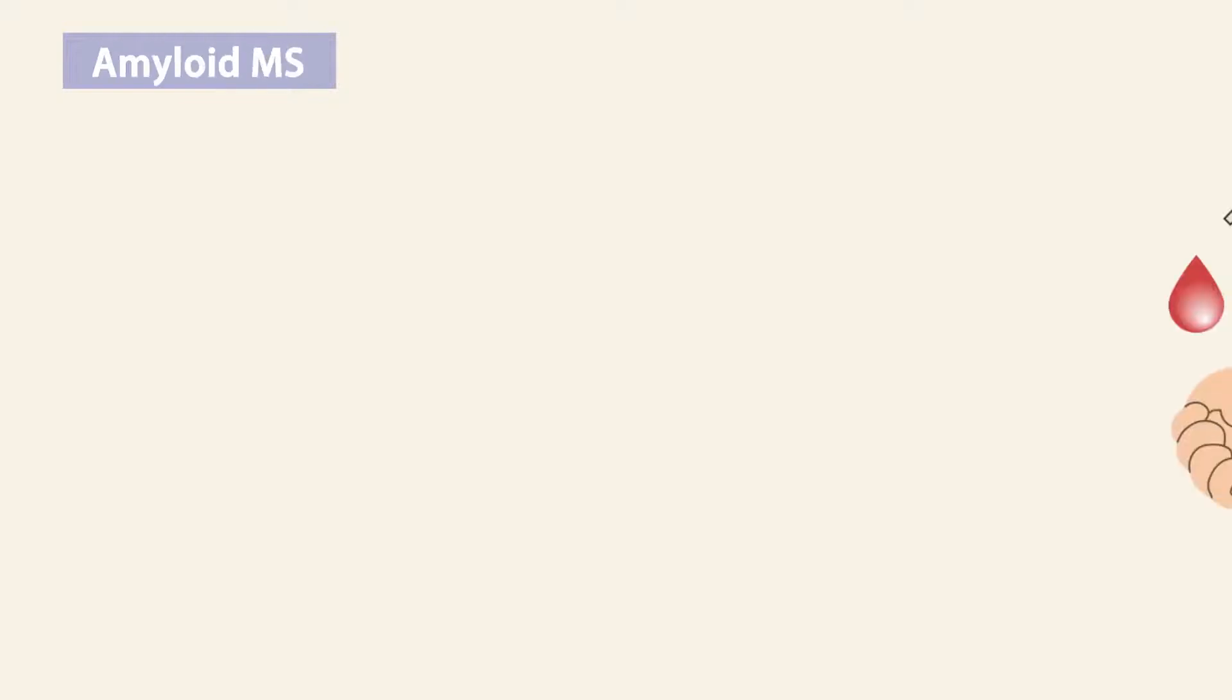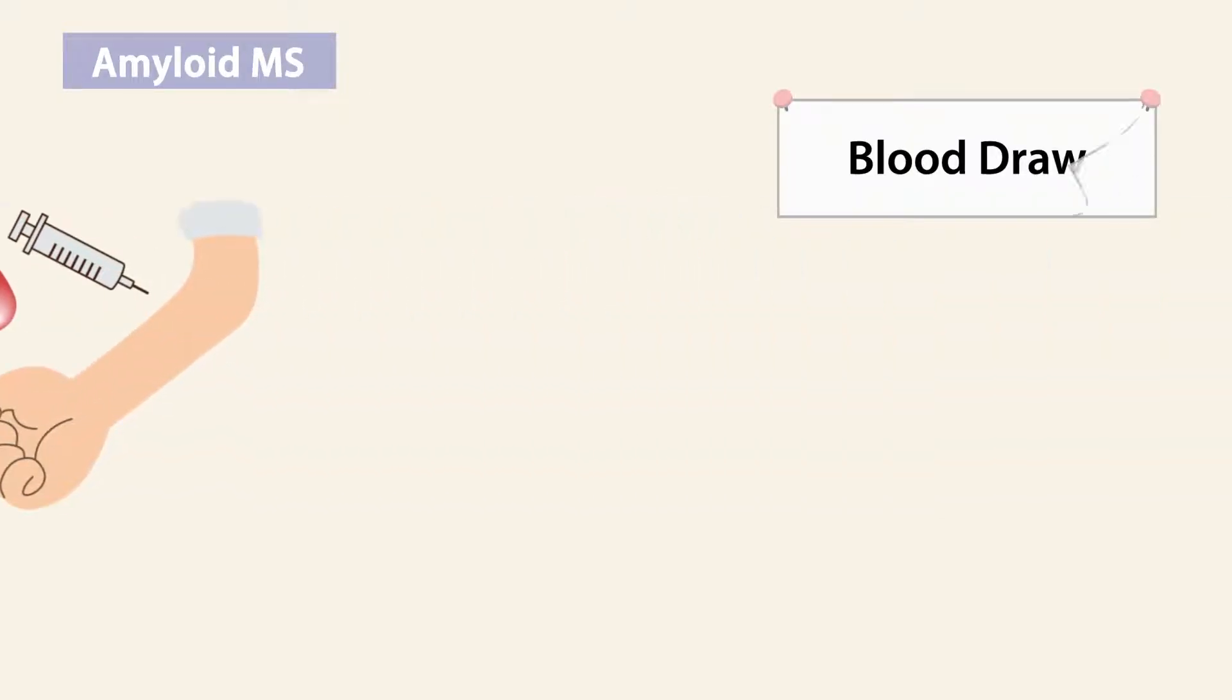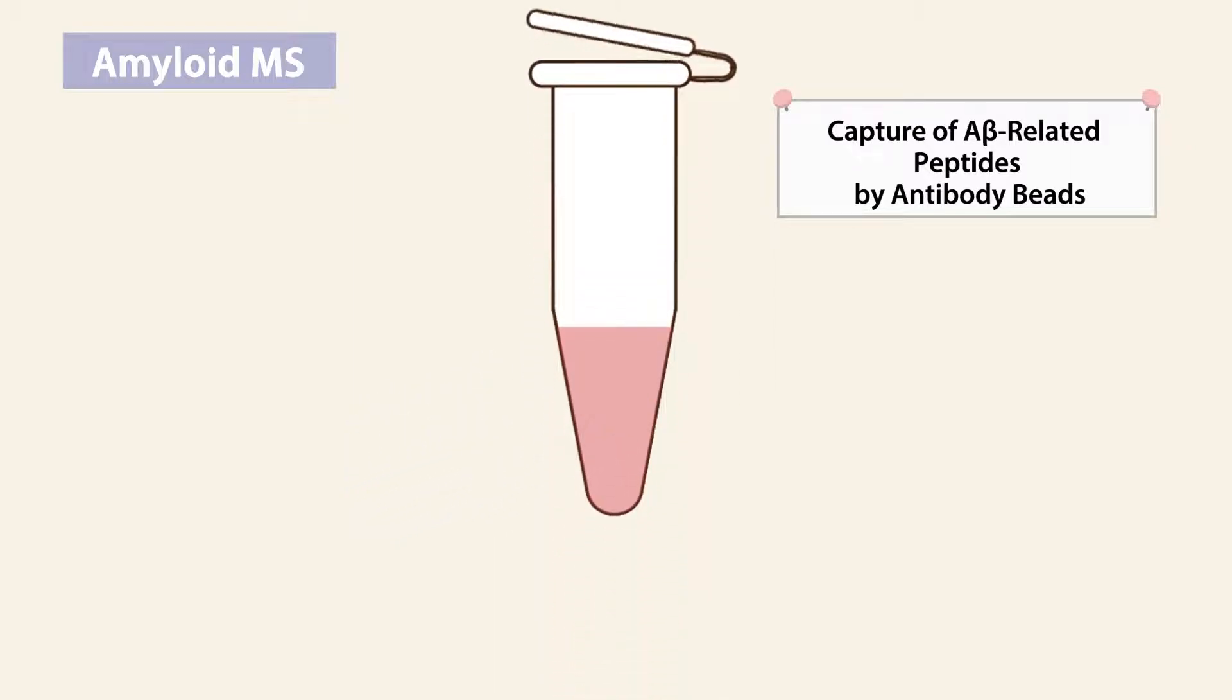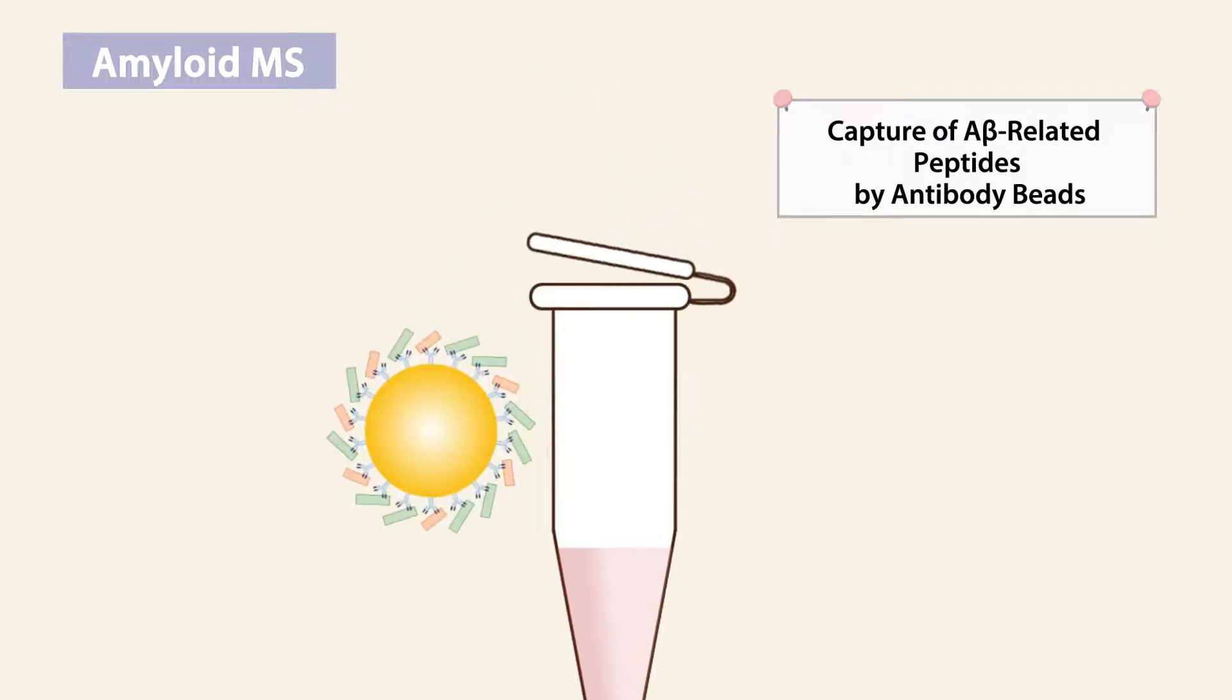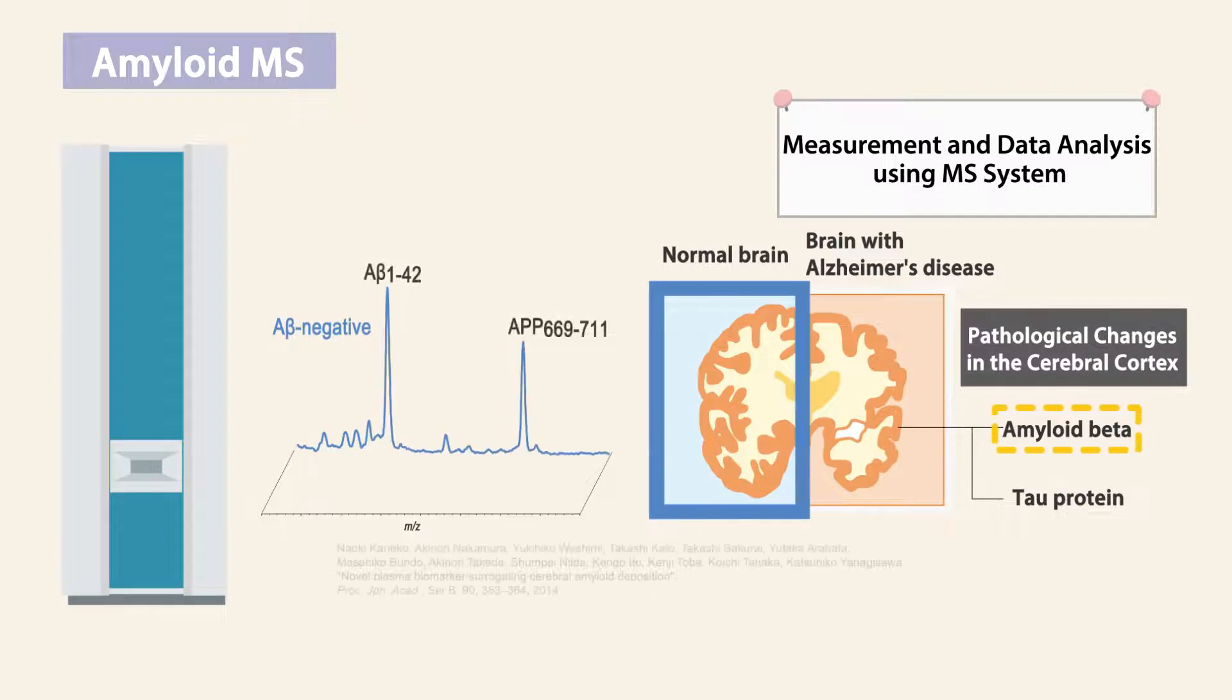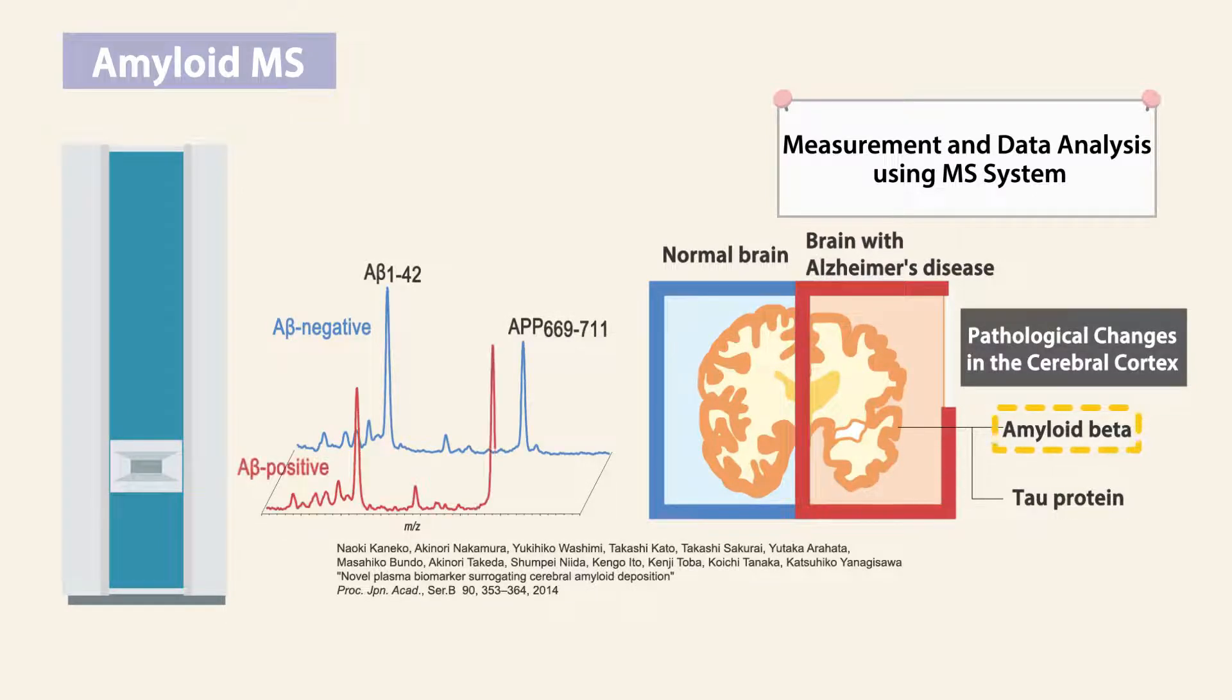Amyloid MS: Amyloid MS is a new blood analysis method developed by Shimadzu Corporation and the National Center for Geriatrics and Gerontology to screen for Alzheimer's disease. Using novel biomarkers, we discovered the possibility of early detection of signs of amyloid beta accumulation.